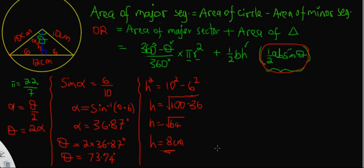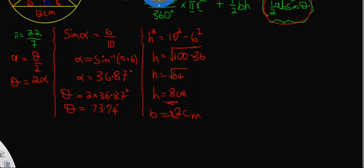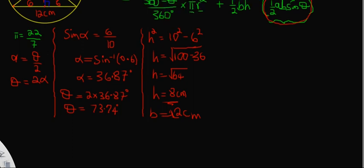Now we have solved for θ, the height h, and we have the base of the triangle which is 12 cm, the radius, and every other value needed. All we need to do is substitute each of these values into the formula and calculate. Let's continue with the solution on this side of the screen.